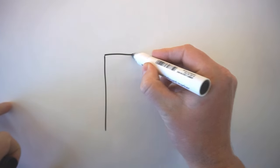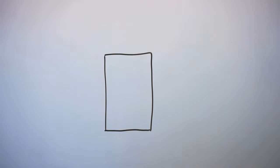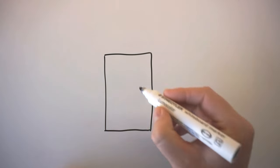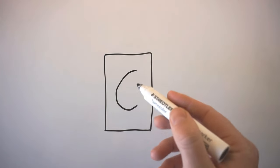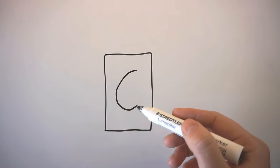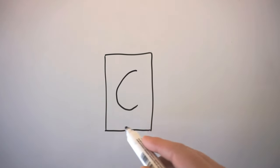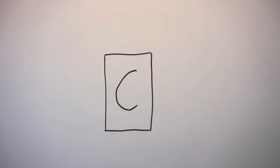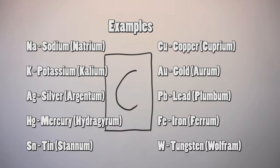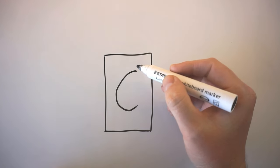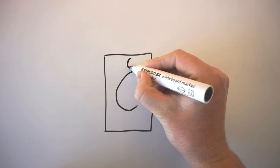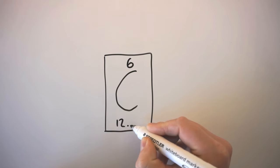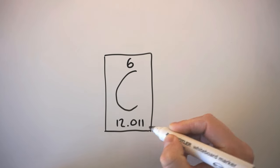When we look up an element on the periodic table, we usually get three pieces of information. The most obvious piece of information is the chemical symbol. In a lot of cases, the chemical symbol relates to the English name of the element — so in this case, it's the first letter of the English name of this element, carbon. In some other cases, the chemical symbol comes from the Latin name of the element. A lot of periodic tables will also have two numbers — one above and one below the chemical symbol. For carbon, it would be a six above and then a number below along the lines of 12.011.